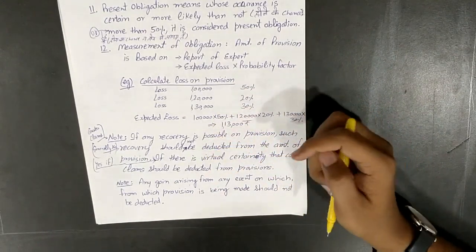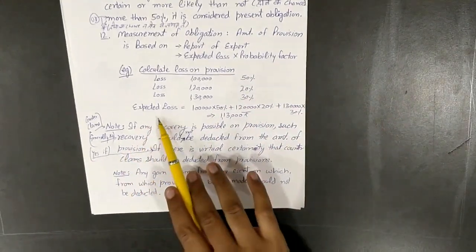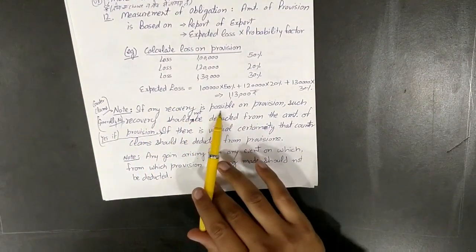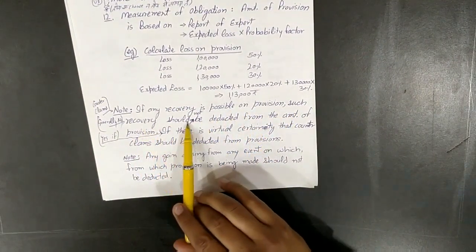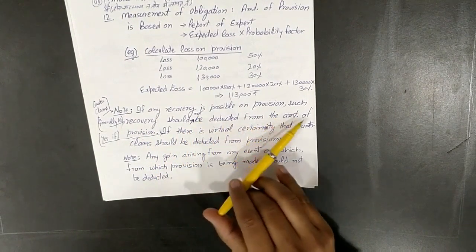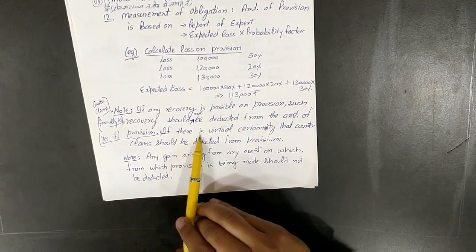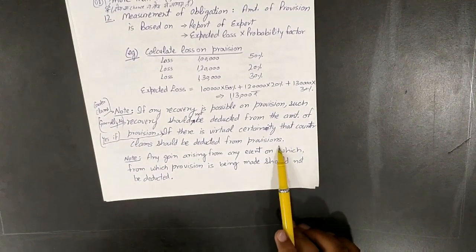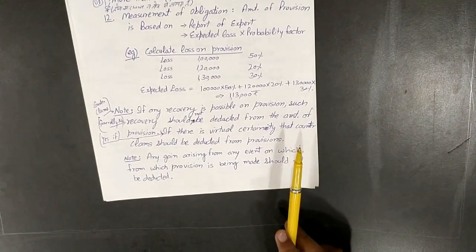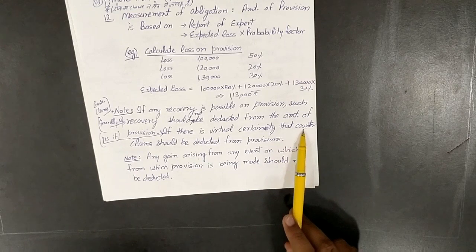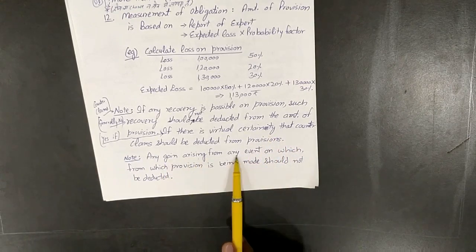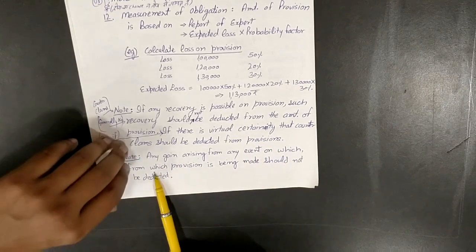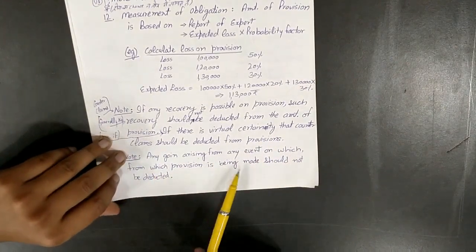Very important notes: If any recovery is possible on provision, such recovery should not be deducted from provision. If there is virtual certainty, counter claims should be deducted from provisions, for example insurance claims. Any gain arising from any event on which provision is being made should not be deducted.